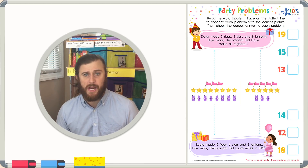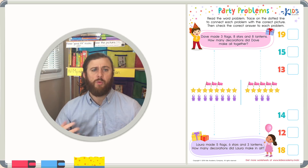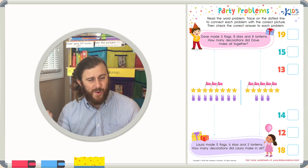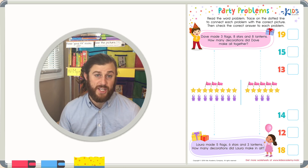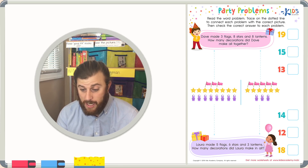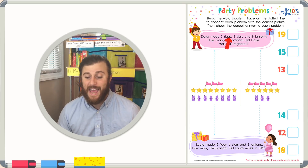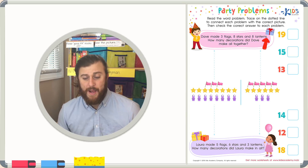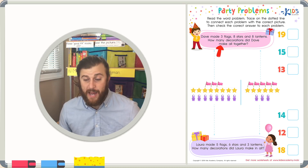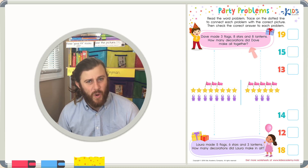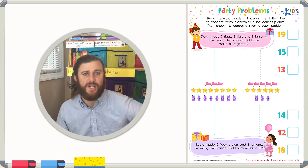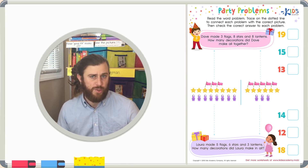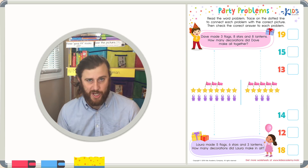Let's read the first word problem carefully one time. Then we'll re-read the word problem and underline the important information. We'll look for those addition and subtraction keywords as well. Dave made three flags, eight stars, and eight lanterns. How many decorations did Dave make all together? I heard the word 'all together' at the end, so I think it's an addition problem. Let's re-read the problem again and underline or pull out some of the important information and keywords.